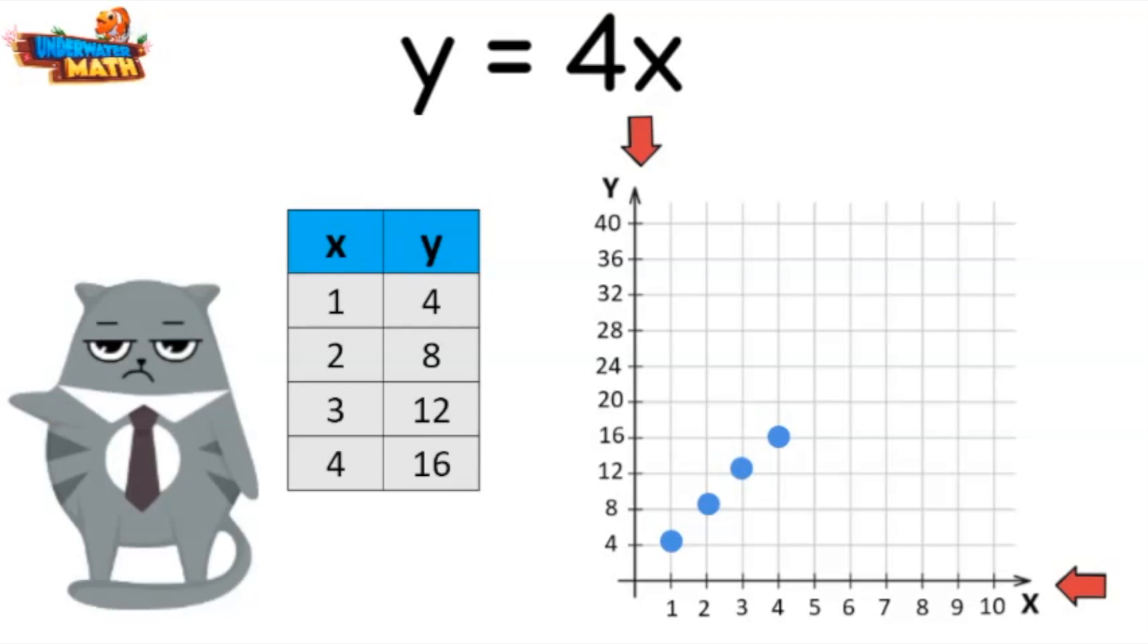If the x coordinate is 6, we just multiply by 4 to find the y coordinate, that's 24. 6 and 24. We could also plot the x coordinate 8 and multiply by 4 to see the y coordinate is 32. 8 and 32.